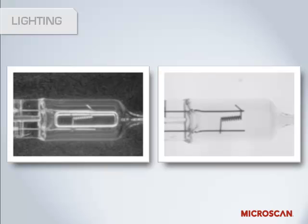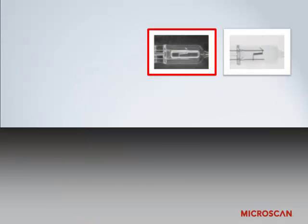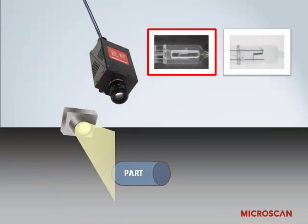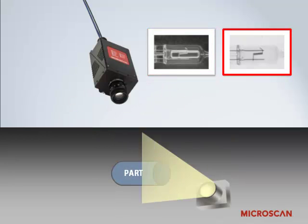Here are two photos of the same light bulb, and let's say that the objective is to see the tungsten filament between the two conductors. In the image on the left, the light is between the camera and the part. On the right, the light is behind the part, away from the camera. In the front-lit image on the left, it's quite hard to see where the filament is. But in the back-lit image, you can clearly see the filament, making it very easy to check its presence and position. In this case, the light's position is critical.